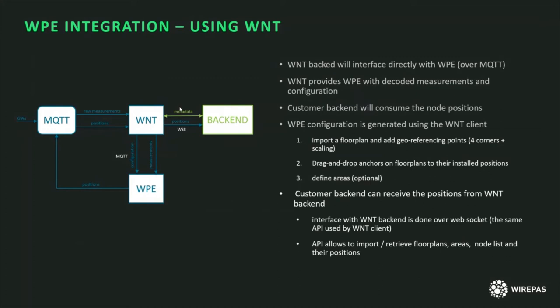The customer backend receives positions from the WNT over a WebSocket. The data is encoded in either JSON or Protocol Buffers. Through that API, you can receive the floor plan, areas, node list, and positions. If desired, you can still get positions directly from the WPE via gRPC or from the MQTT broker — that option is also available.